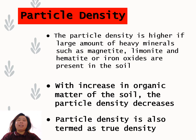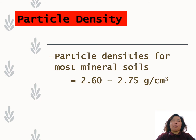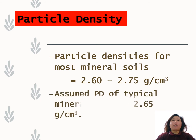Particle density is also known as the true density of the soil. The particle density of most mineral soils ranges from 2.6 to 2.75 grams per cubic centimeter. It can be assumed that the particle density of a typical mineral soil has an average of 2.65 grams per cubic centimeter.